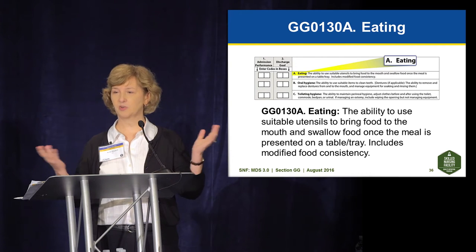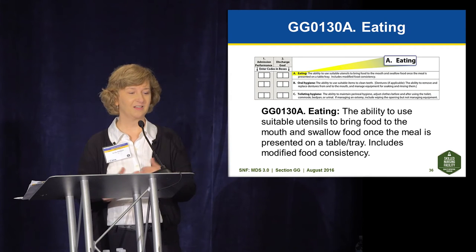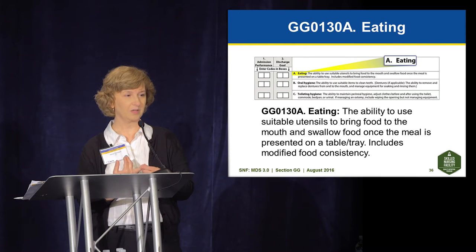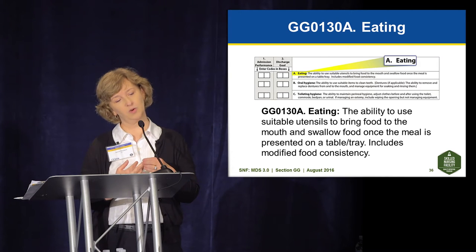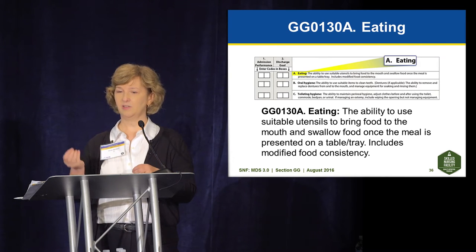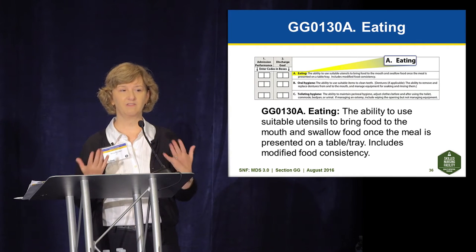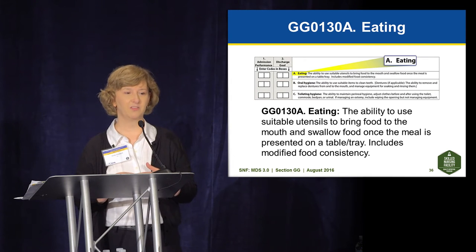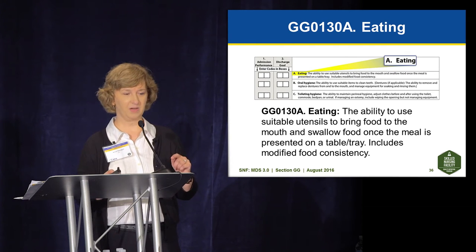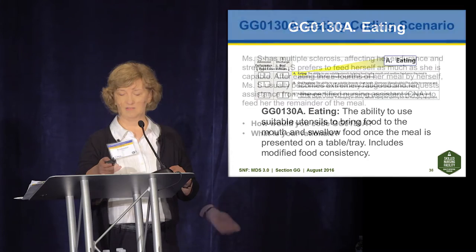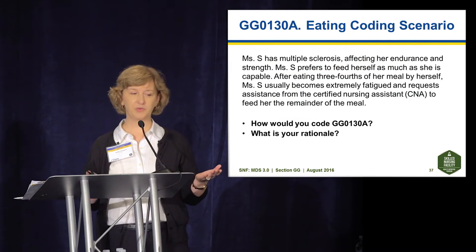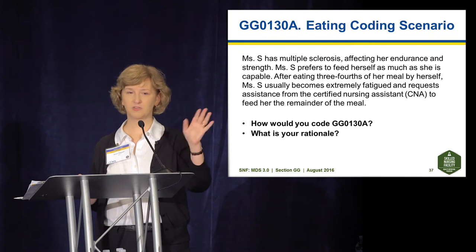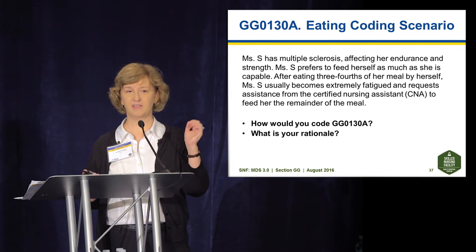Eating — GG0130A — is defined as the ability to use suitable utensils to bring food and liquids to the mouth and swallow food once the meal is presented on a table or tray. It includes modified food consistency. This covers both eating solid food and drinking liquids. If the person eats finger foods with their fingers, that is acceptable — fingers may be a suitable utensil depending on the food.